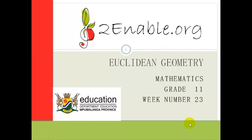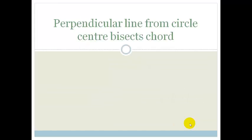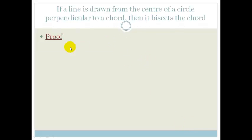Good day, grade 11s. Welcome to your third lesson in Euclidean geometry. In this lesson, we're going to give you your next proof, which says that if you have a perpendicular line from the circle center, it's going to bisect the chord. So it's kind of the inverse of what we've just proven. So here is the proof.